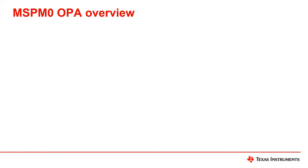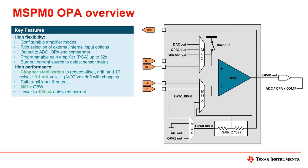Let's start by looking at the features of the OPA. Overall, the OPAs on MSPM0 are a peripheral that offers high flexibility and performance. In terms of flexibility, there are configurable operational amplifier modes such as non-inverting, inverting, etc. There are a variety of input signals to select and a gain of up to 32 times. The OPA output can also be connected internally directly to the ADC, another OPA, and the comparator.